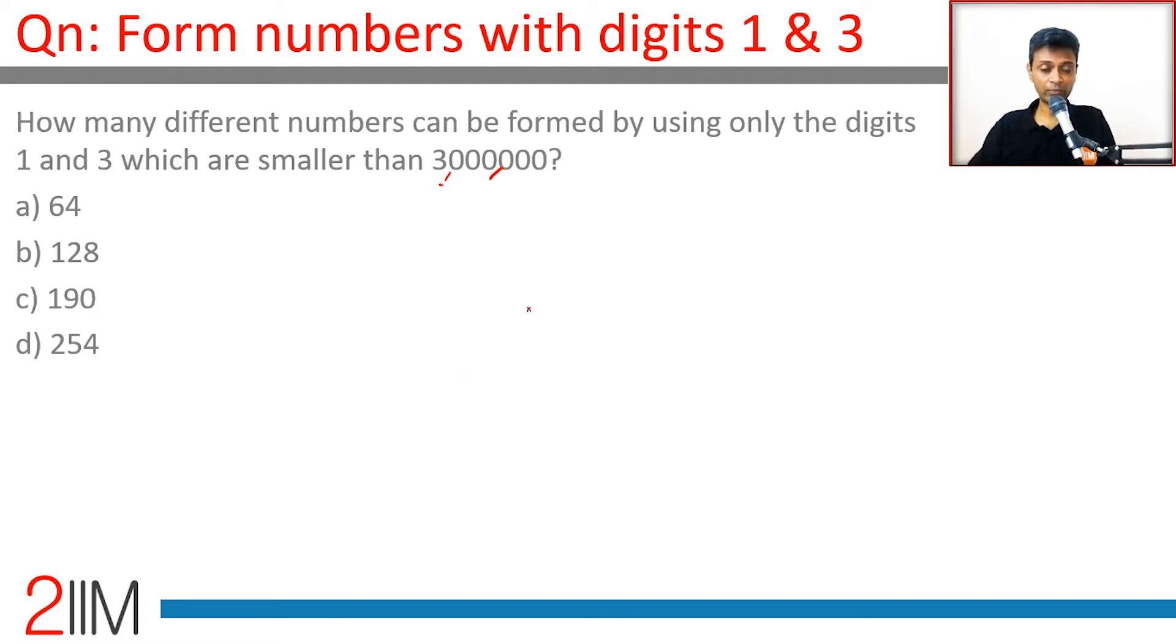Four digit numbers, etc. How many single digit numbers are there? 1 and 3, so two numbers. Two digit numbers: 1-1, 1-3, 3-1, 3-3, four numbers.